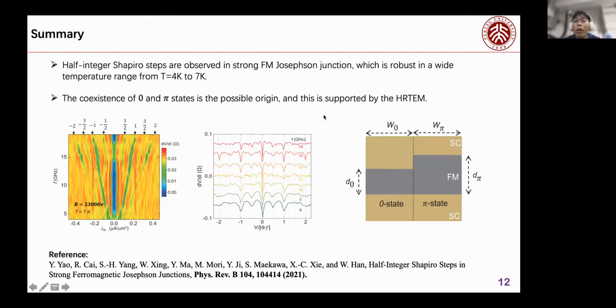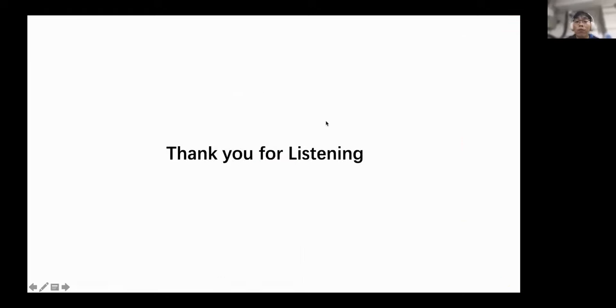Let me do a summary. We observe half integer Shapiro steps in a strong ferromagnetic Josephson junction, and this is very robust in a wide temperature range from 4K to 7K. The coexistence of zero and π states is the most possible origin from our best understanding, and this is supported by the high-resolution TEM experiment. Okay, that's all. Thanks for y'all listening.